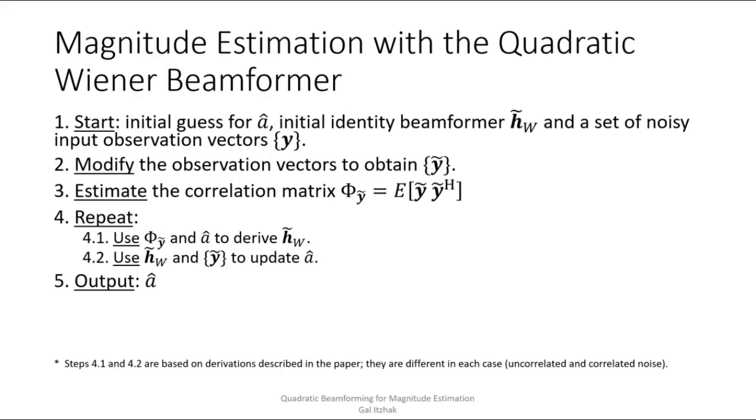Okay, so now let's take a brief look at the iterative estimation algorithm. It's described in much more details within the paper. So we start with an initial guess for A, and with some initial state for the quadratic Wiener H W tilde, and we're also given a set of input observation vectors y. So we start by modifying the observation vectors to obtain the set y tilde, and then we use a subset of y tilde to estimate the correlation metrics phi y tilde.